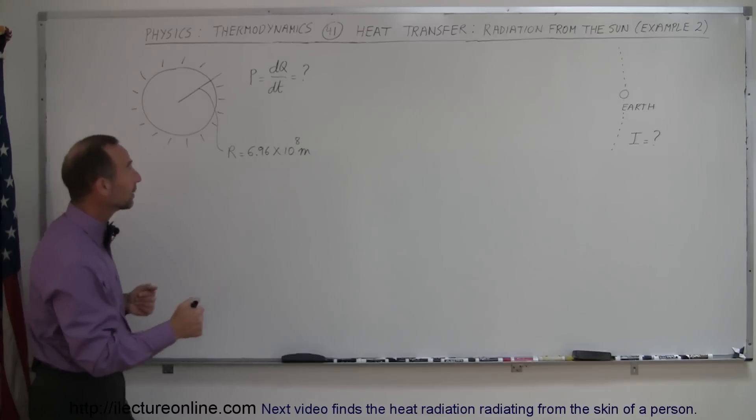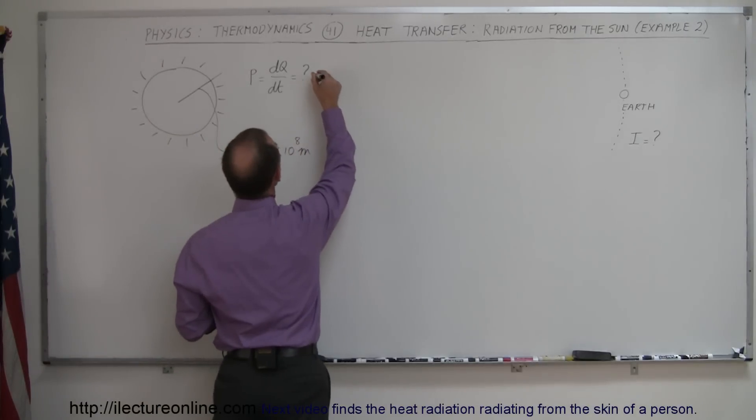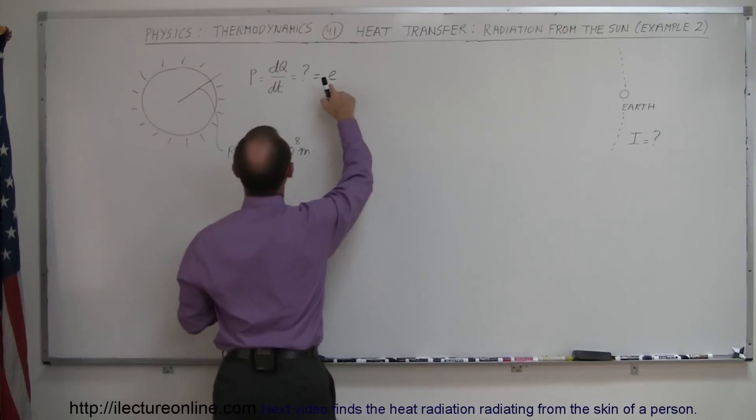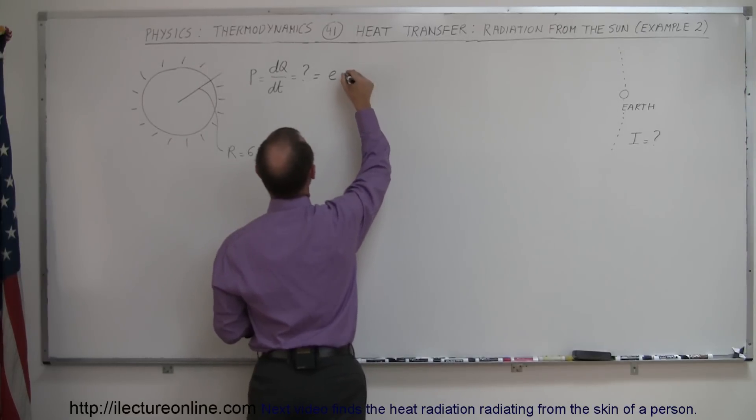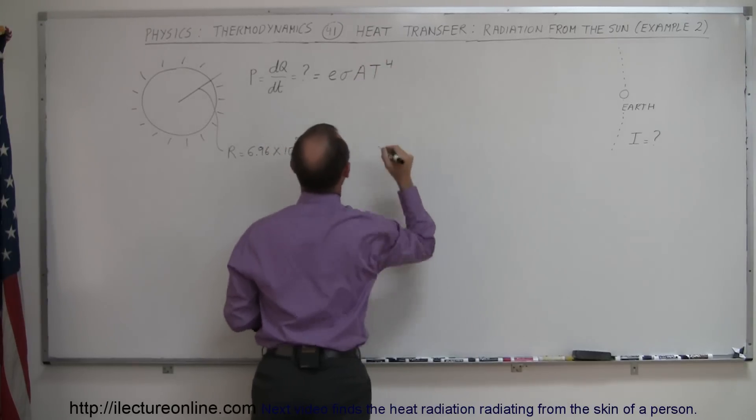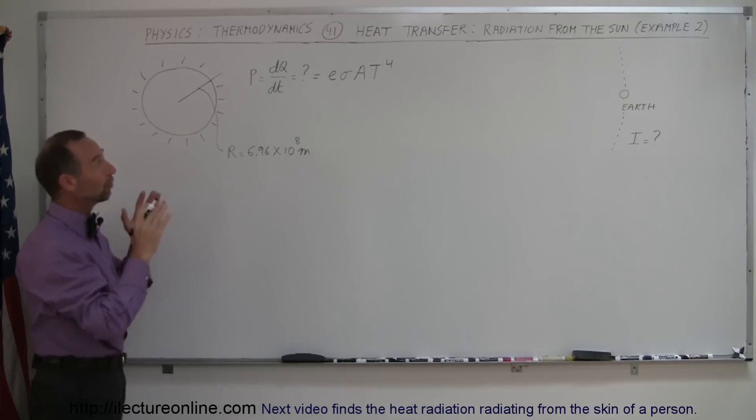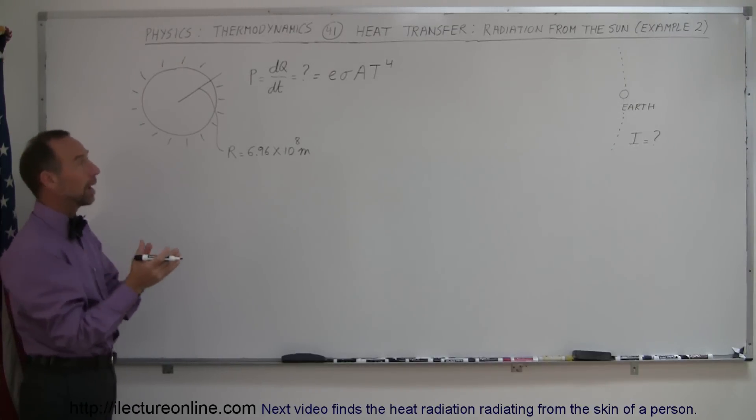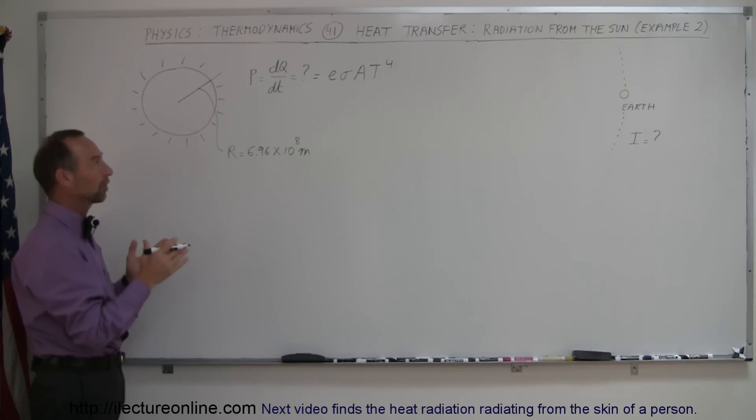First of all, let's write down the equation. The dQ/dt is equal to the emissivity of the material for the sun, which would be 1, times the constant sigma, times A, and T to the fourth power. Now, A is the surface area of the sun, and T to the fourth power is the temperature of the sun. So first we need to find the temperature and the surface area of the sun.